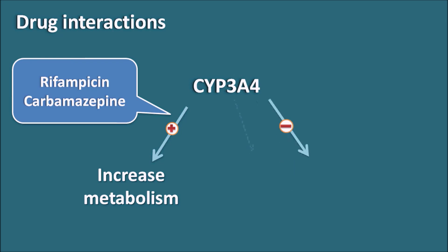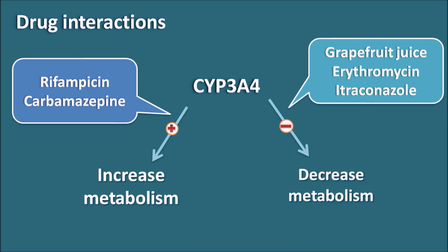Some drugs can also inhibit CYP3A4, thereby decreasing the metabolism of buspirone. Among the drugs that inhibit CYP3A4, grapefruit juice is one example, which may lead to decreased metabolism and increased toxicity of buspirone. Similarly, other drugs like erythromycin, itraconazole, haloperidol, selective serotonin reuptake inhibitors, and some antidepressants like tricyclic antidepressants can all inhibit this metabolism, thereby increasing the toxicity of buspirone.